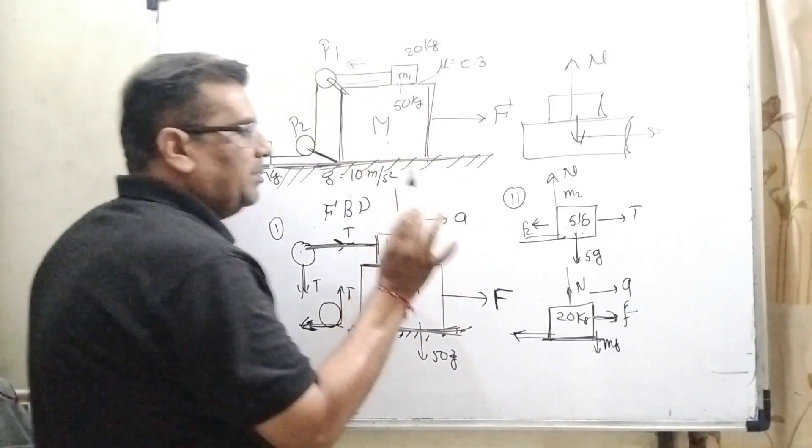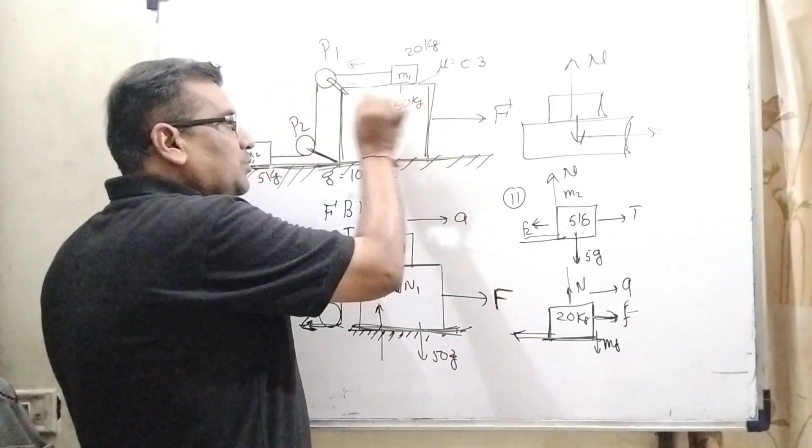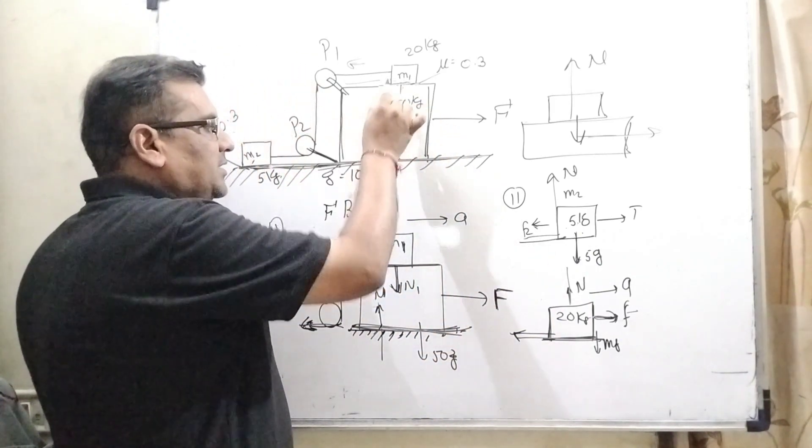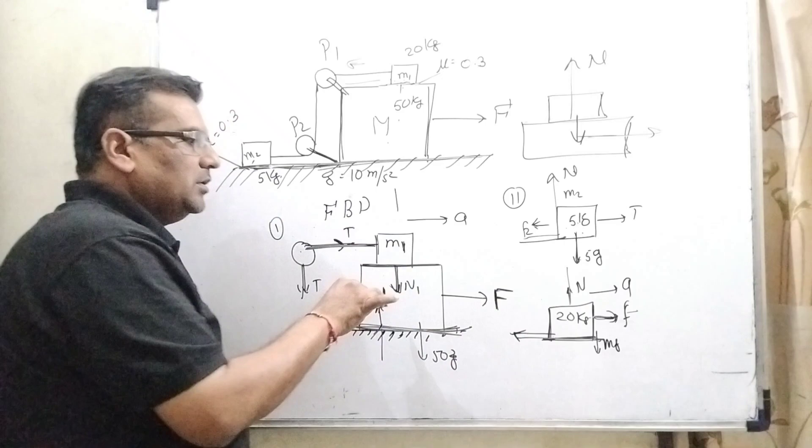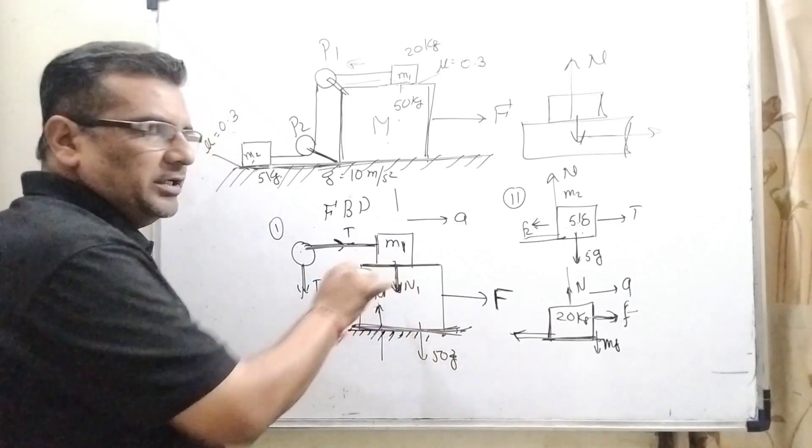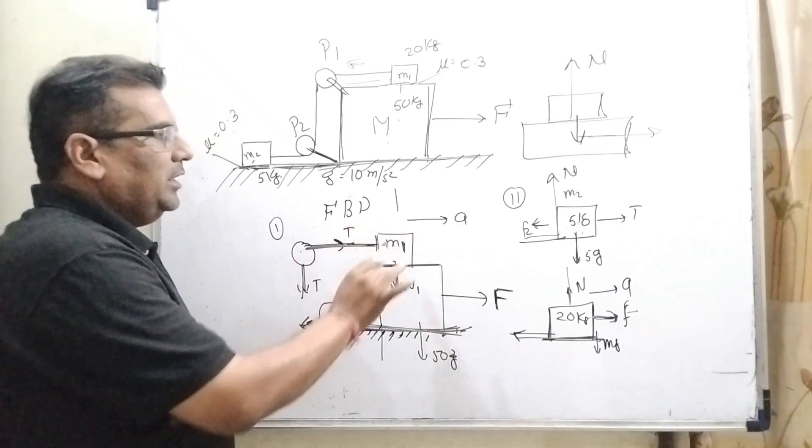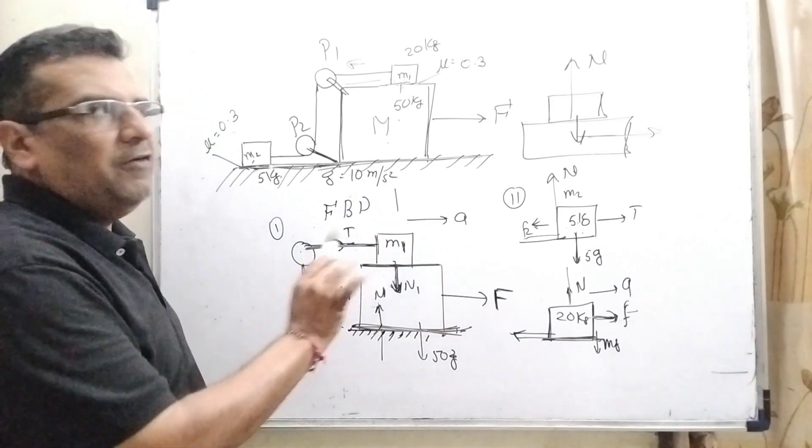This is possible only when this block is moving, this block is moving, okay, and it is raised and it is moving. The normal force is in direction opposite direction. So therefore this is all this description of free body diagram.